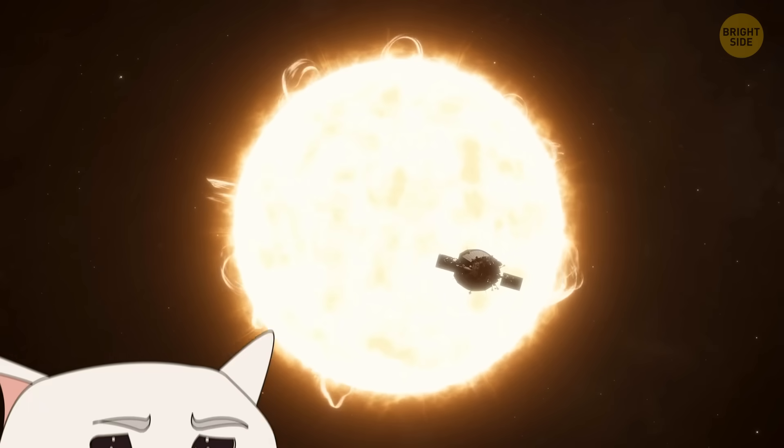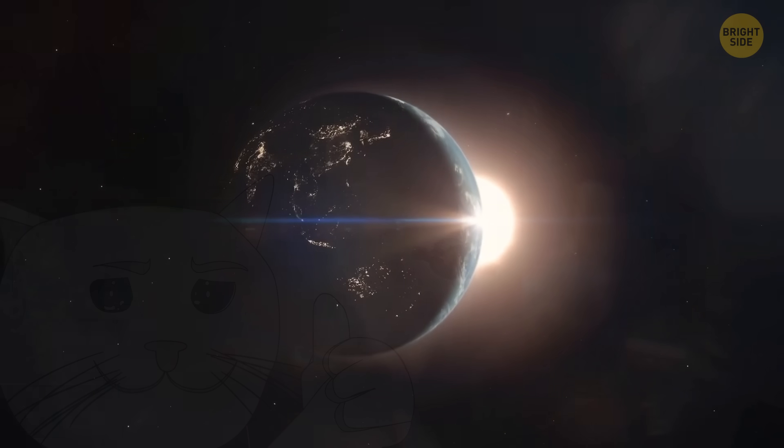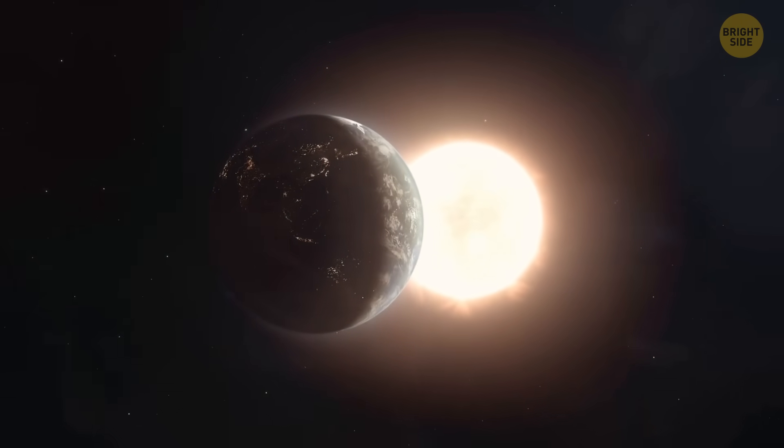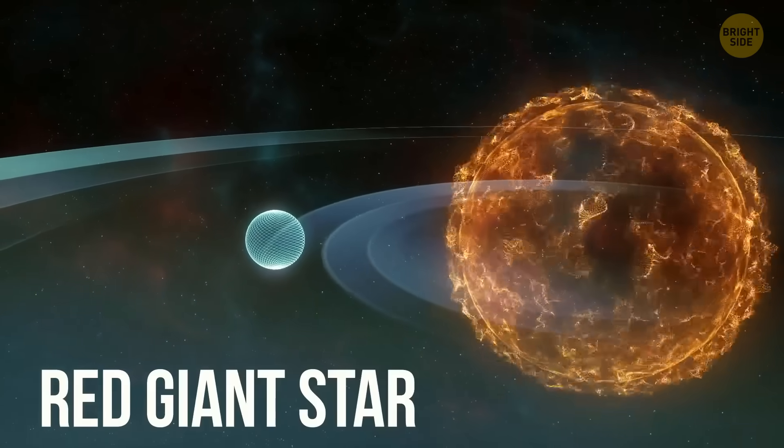But don't worry, our Sun will never turn into a black hole. It doesn't have enough mass to do so. Instead, in about 5 billion years, when the Sun reaches the end of its life, it will become a red giant star.